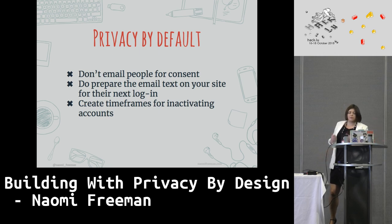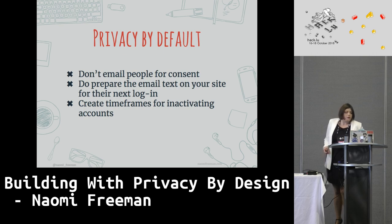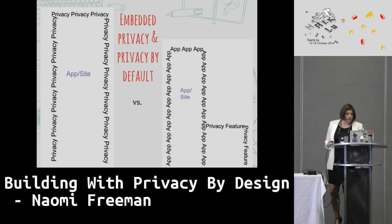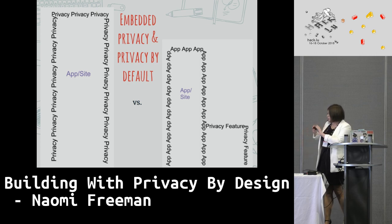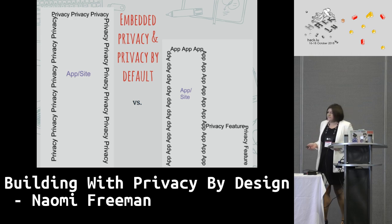First, you don't email and harass people. You keep a user's data in the system for a defined time period, and if they don't log in during that time, you inactivate the account. Second, you prepare your system with that necessary email for when they do log in — they're going to come back at some point. Beyond that, we move to embedded privacy — the idea that privacy by default is at the core, it's the whole entire system. You don't just tag it on at the end. Even looking at this non-realistic example, you can see how much more fragile the system on the right is compared to a system built with privacy as its very bones.